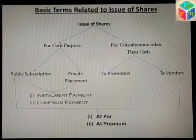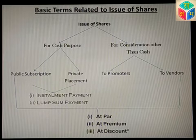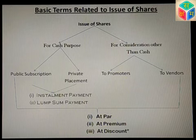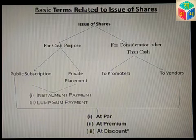From a theoretical point of view, shares can be issued at three prices: at par, at premium, or at discount. Practically, presently a company cannot issue shares at a discount — discount is prohibited. Currently, shares can only be issued at par or at premium.